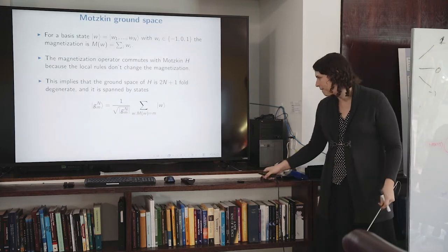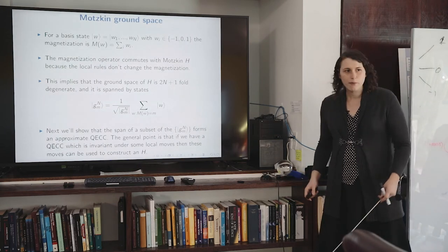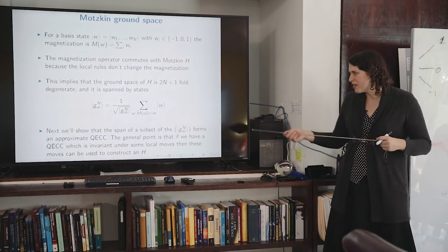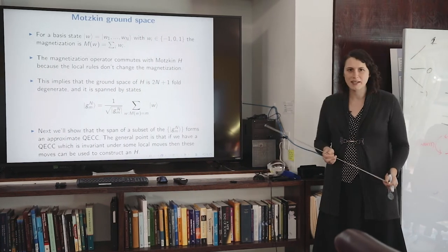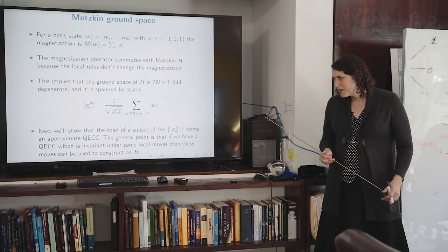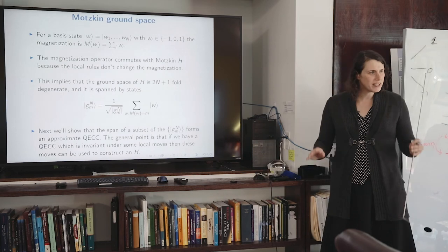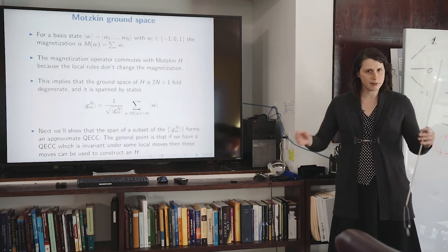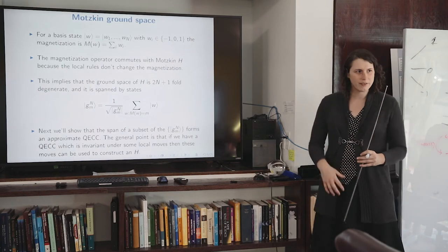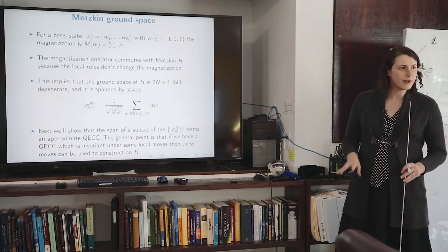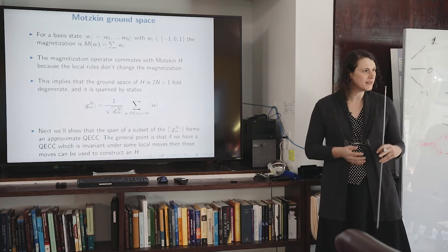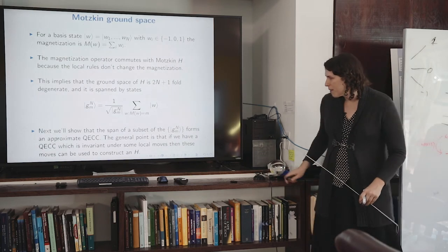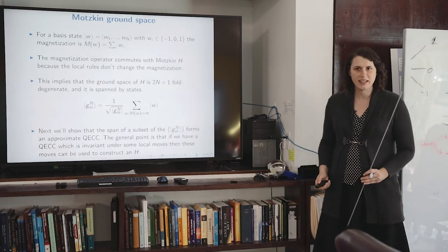The magnetization commutes with our Hamiltonian since the local moves don't change it. The ground state is therefore (2n+1)-fold degenerate, spanned by uniform superpositions of all basis states at each value of the magnetization. These are coherent versions of the classical stationary distributions for each connected component — they are the ground states of our quantum Hamiltonian corresponding to those connected components.